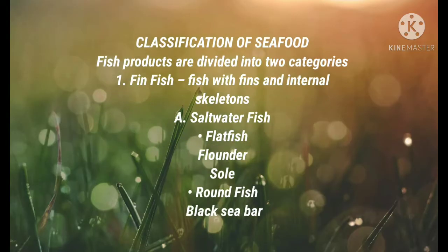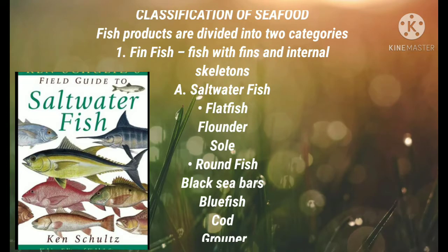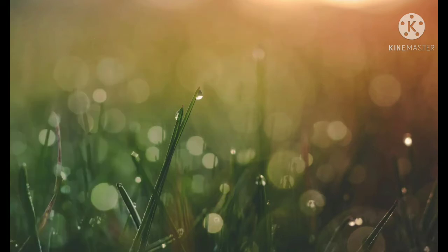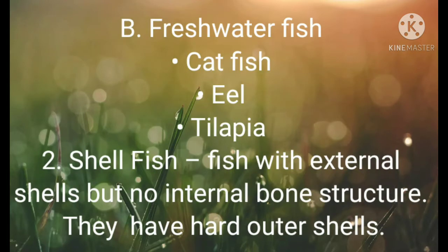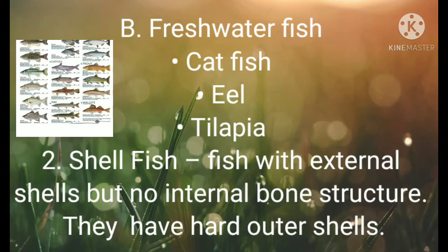Seafood has many classifications. Fish products are divided into two categories. Number one: fin fish — fish with fins and an internal skeleton. Saltwater fish examples include flat fish such as flounder and sole, and round fish such as black sea bass, bluefish, and cod. For freshwater fish, we have catfish, eel, and tilapia.